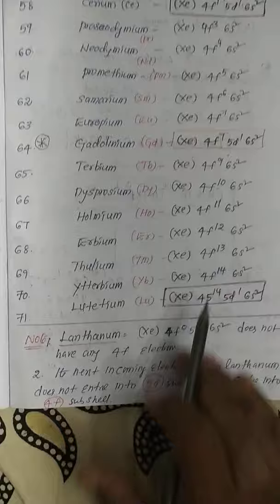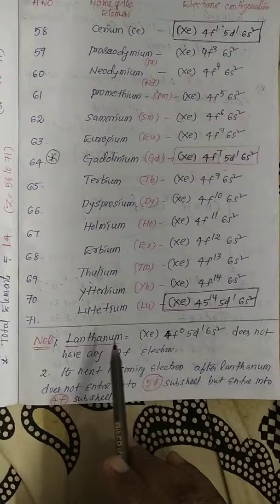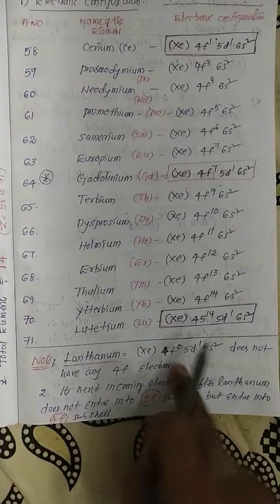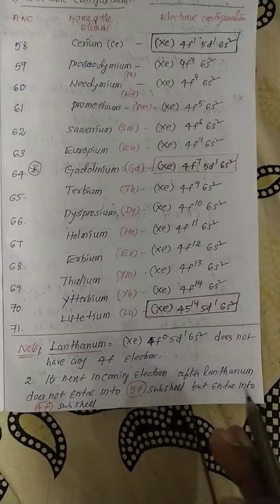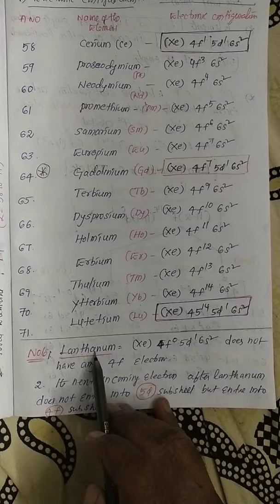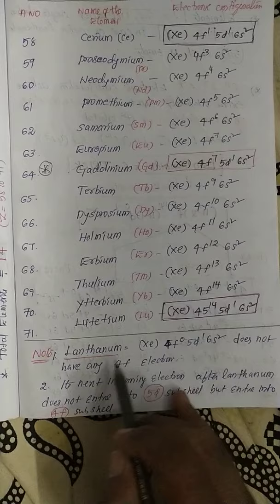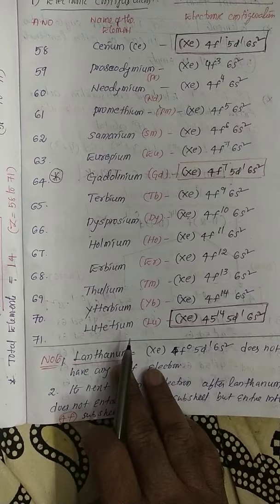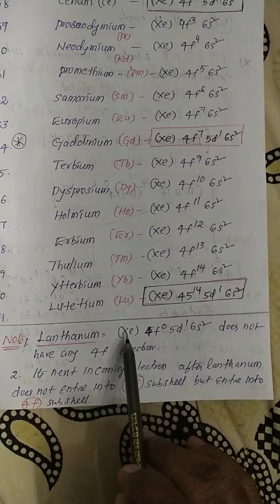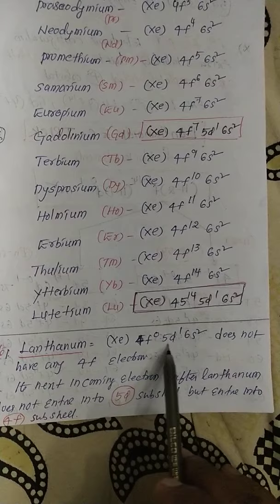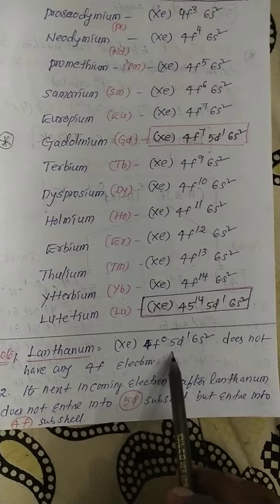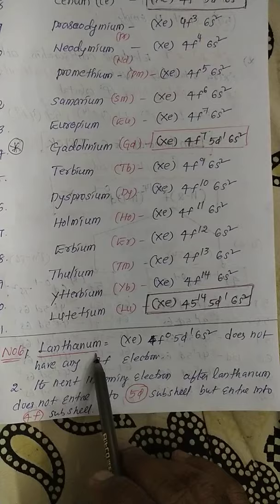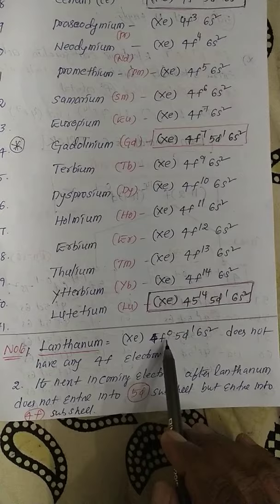Lanthanum (atomic number 57) has the electronic configuration [Xe] 4f⁰ 5d¹ 6s² — the last electron enters the d-orbital, so lanthanum belongs to the d-block element, not the f-block. After lanthanum, the following 14 elements are called lanthanides. The name 'lanthanides' is based on lanthanum, but lanthanum itself is not an f-block element.